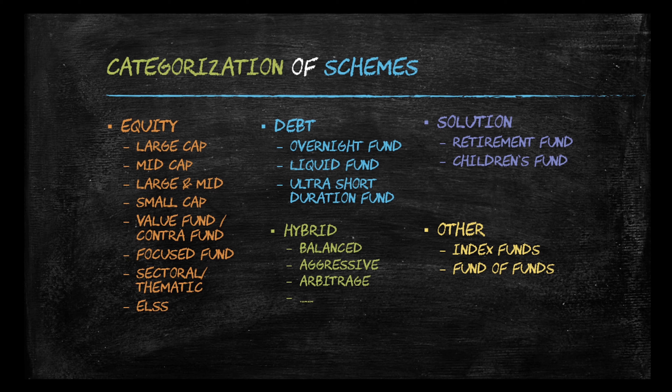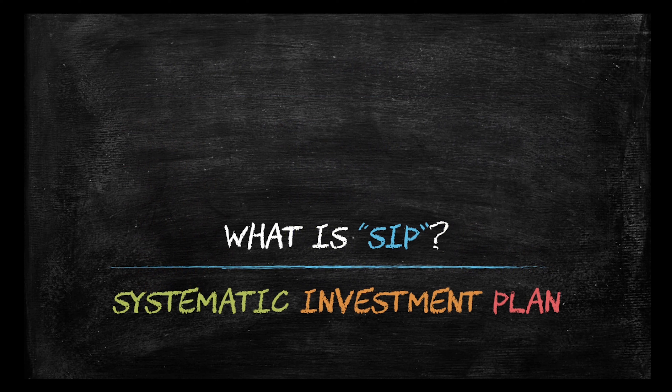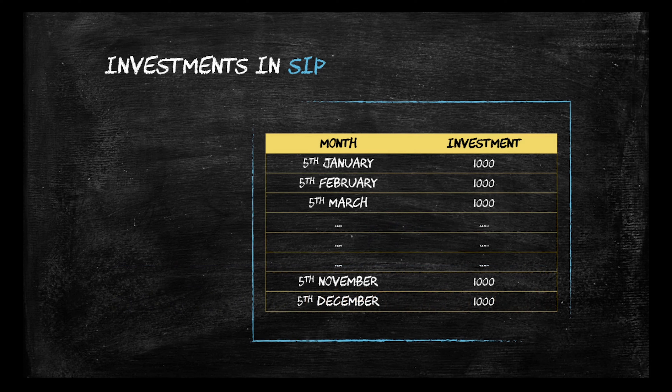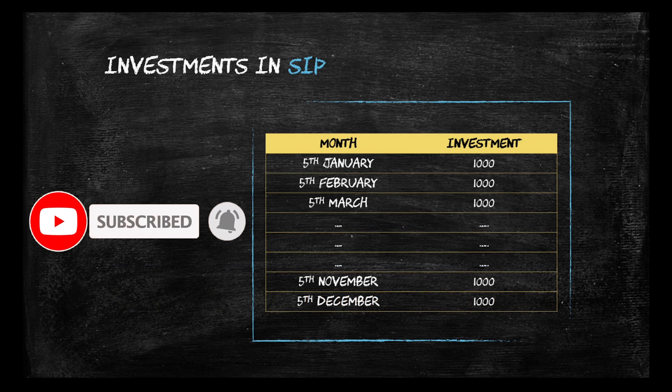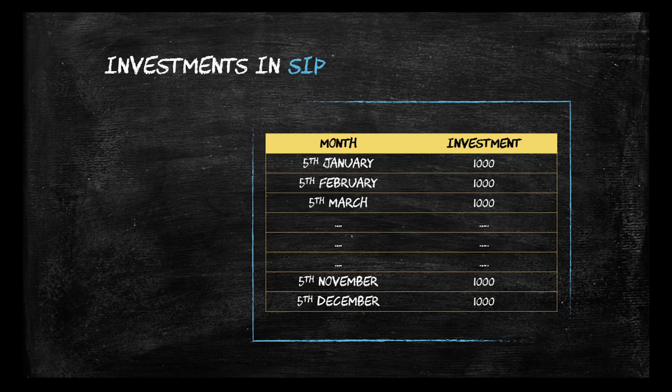Now let's come to the terminology most commonly associated with mutual funds, which is SIP. The full form of SIP, as you may already know, is Systematic Investment Plan. Systematic investment means you are putting in your investment as per a system. For example, on the 5th of every month you put a thousand rupees into some instrument — that can be a recurring deposit, a post office deposit, or a mutual fund. Since you are doing this on the 5th of every month, there is a system in place, so it is called a Systematic Investment Plan.